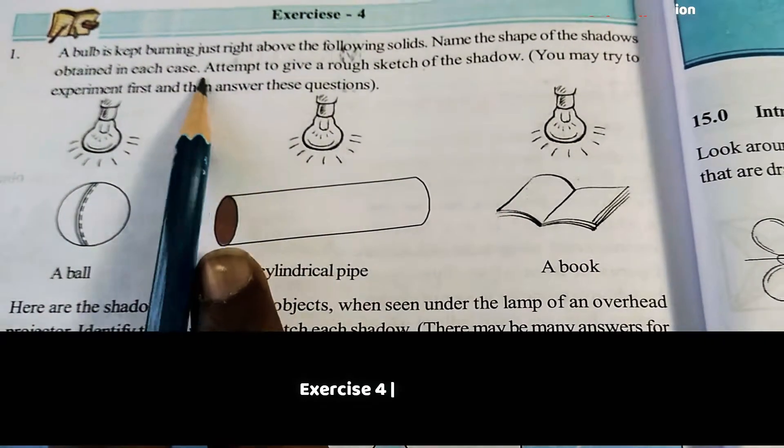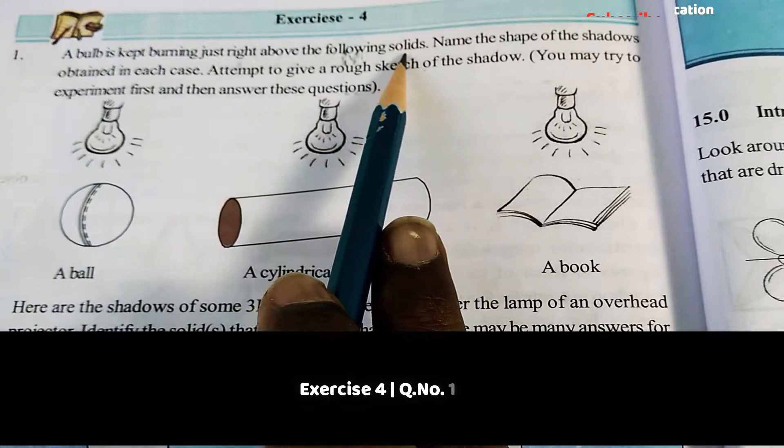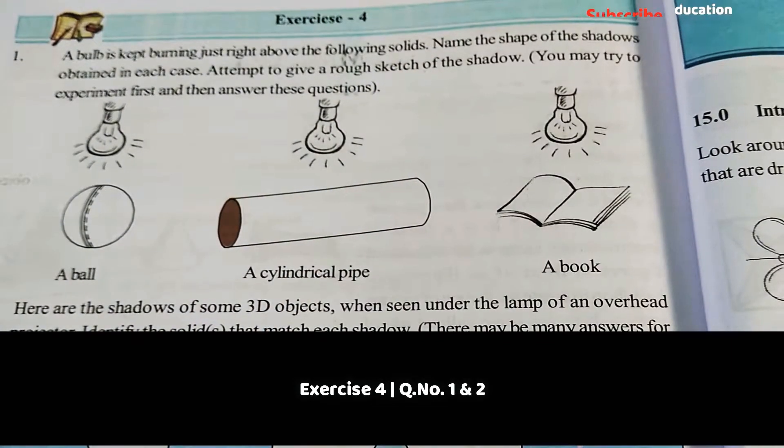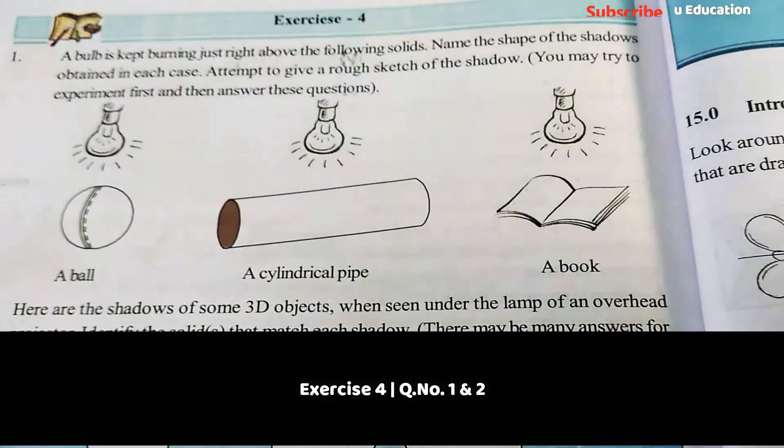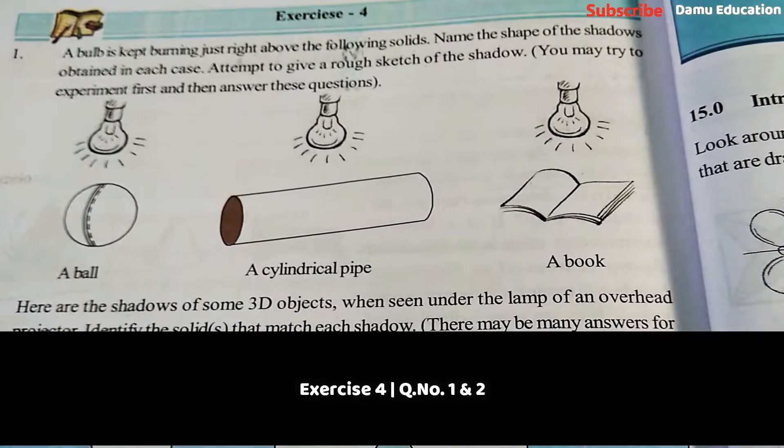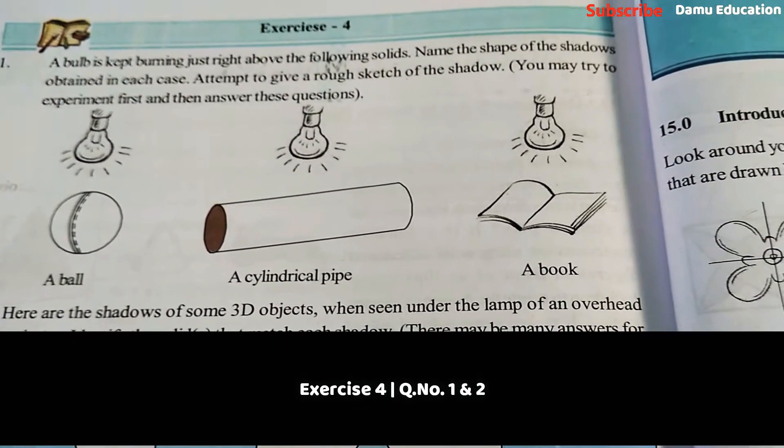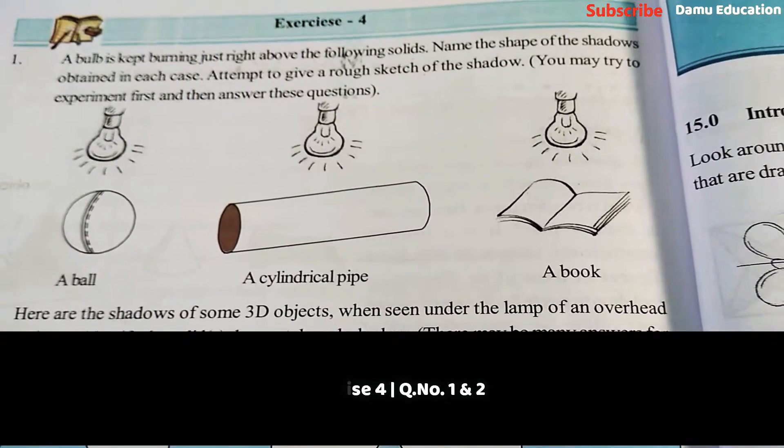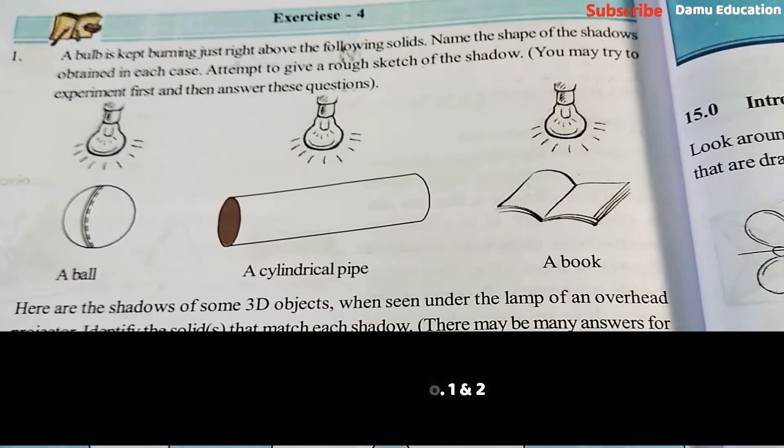A bulb is kept burning just right above the following solids. Name the shape of the shadows obtained in each case. Attempt to give a rough sketch of the shadow. You may try to experiment first and then answer these questions.